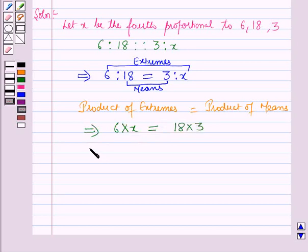This implies x = (18×3)/6. Since 18 = 2×9 and 6 = 2×3, we get x = 9.